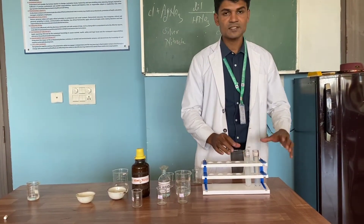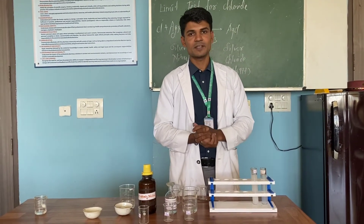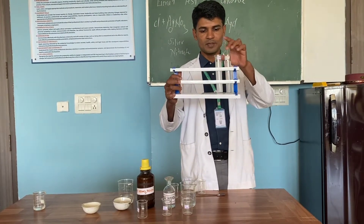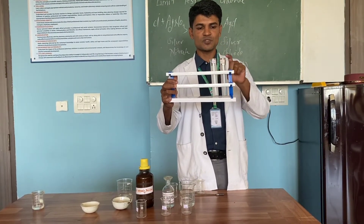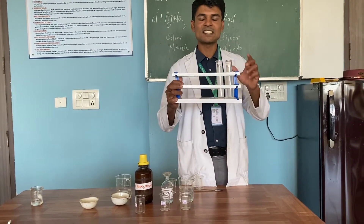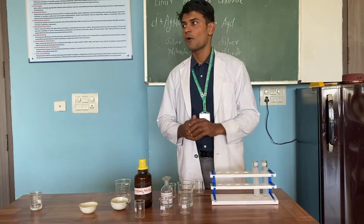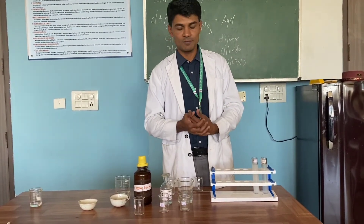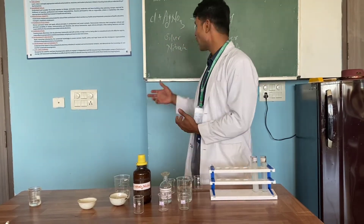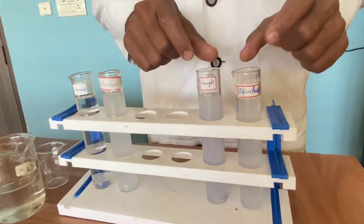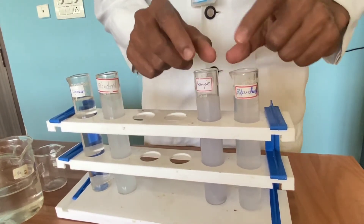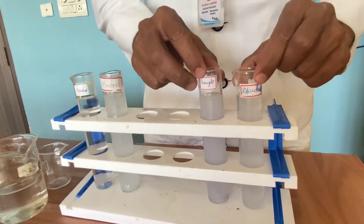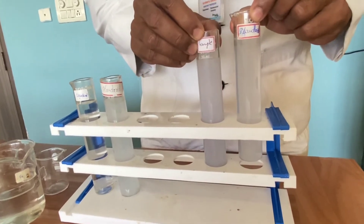Now after this, we have to wait for 2 minutes to see if turbidity has developed or not. But here we can already see turbidity developed in the sample. When the turbidity or opalescence formed in the sample is more than the standard, it means the formation of AgCl is more. The more Chloride ions present, the more AgCl will form, and the more the precipitate will be. Looking at these Nessler cylinders — this is the sample and this is the standard — there is less turbidity in the standard solution as compared to the sample.